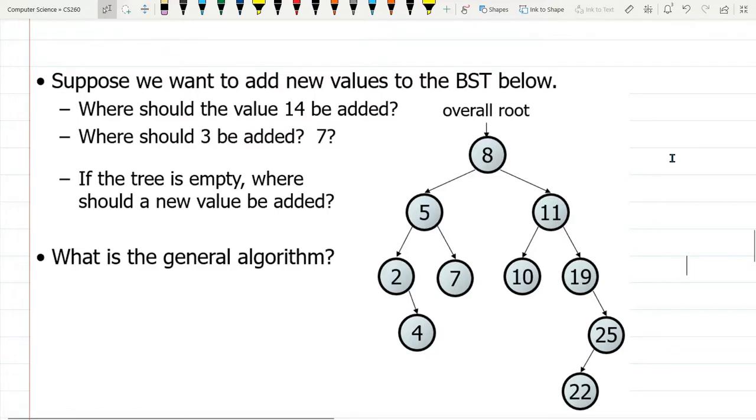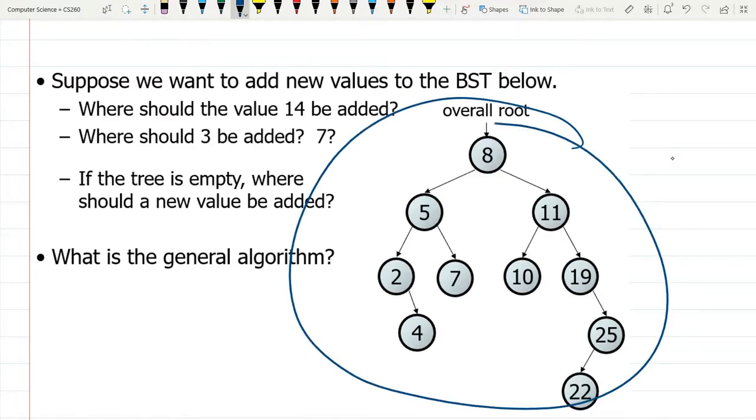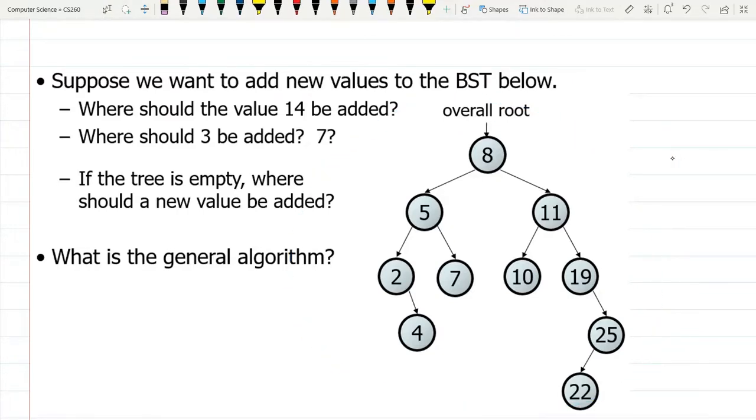And we're going to look right now just at the theory of where in the world would a 14 be added to this tree. So we're going to add a 14. How in the world do we do it? Well, like every method, we're going to start at the root and then decide what to do next.